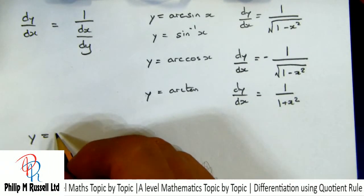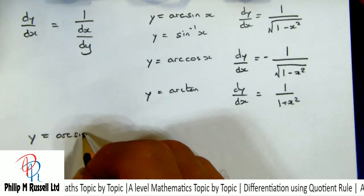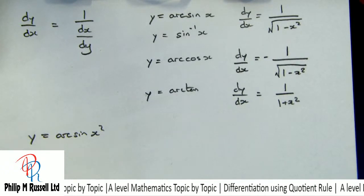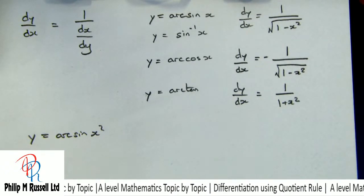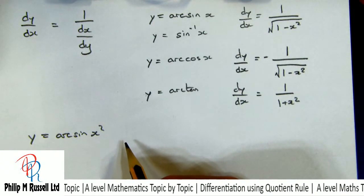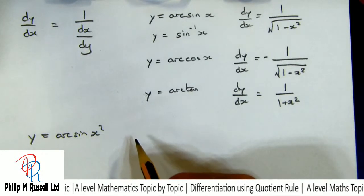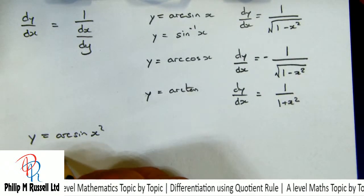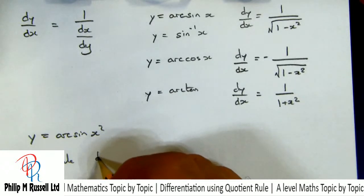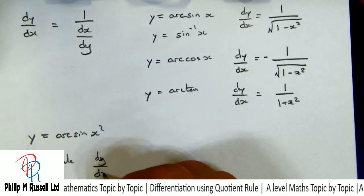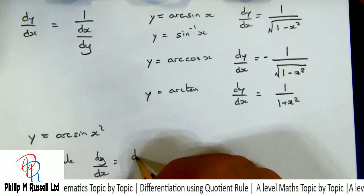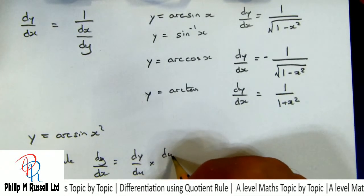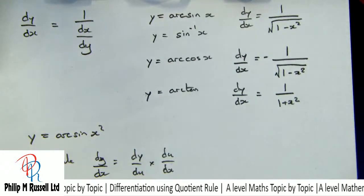Let's look at y = arcsin(x²) and find dy/dx. We'll use the chain rule: dy/dx = (dy/du) times (du/dx). Let u = x², so y = arcsin(u).